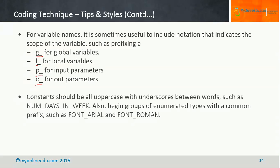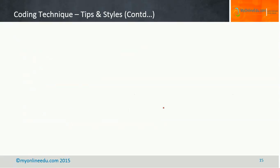When declaring constants, they should be uppercase with underscores between words and should be meaningful. For example, NUM_DAYS_IN_WEEK for the number of days in a week. If you are defining constants of a common type, prefix them with a common name — for example, FONT_ARIAL or FONT_ROMAN, where FONT is the common prefix. This makes it much easier to understand for yourself and for others.